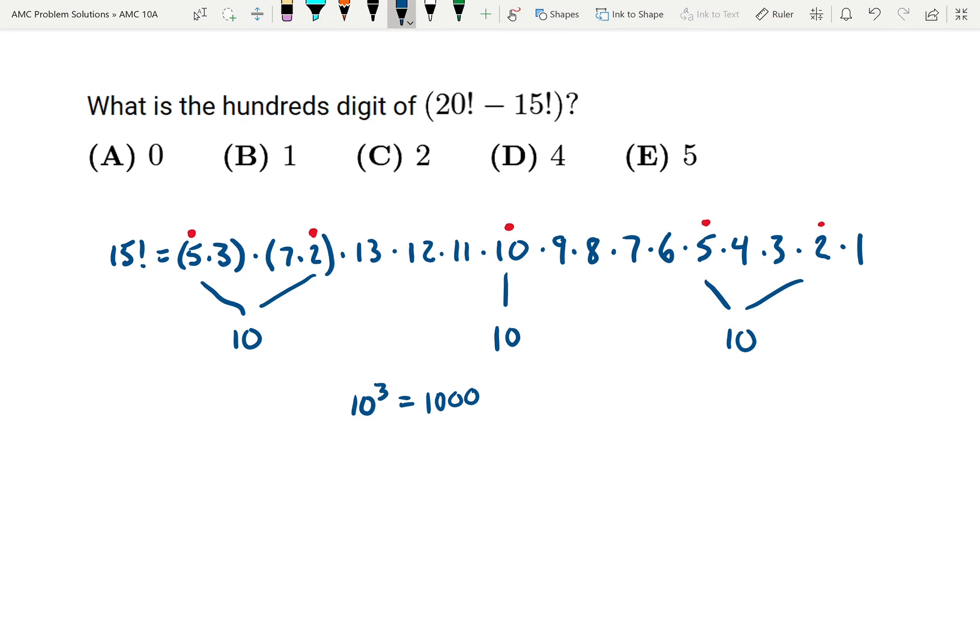I can say 20 factorial divided by a thousand equals some integer x, and 15 factorial divided by a thousand equals some integer y.